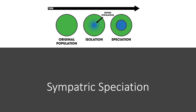The two different types of apples present in the area are red and green, however they do not normally feed on the green. At some point in time, some of the hawthorn flies do end up feeding on the green apples, and they continue to feed on the green. Their progeny also feed on the green, and they start to accumulate more of a difference between the flies that feed on red apples versus the flies that feed on green apples.